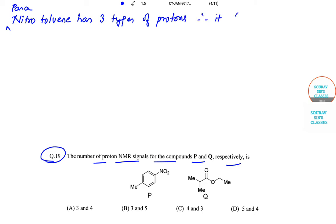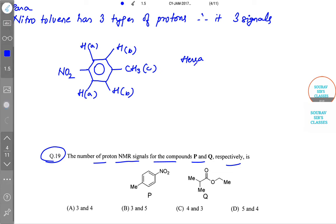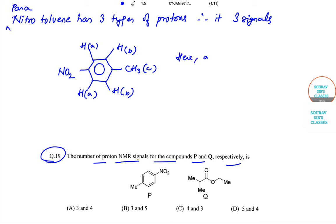Therefore it gives three signals. Let us see the diagrammatic representation. We have hydrogen A, hydrogen B, and a CH3 methyl group, then H_B, H_A, and NO2 (nitrogen dioxide). Here A, B, and C are three types of protons.